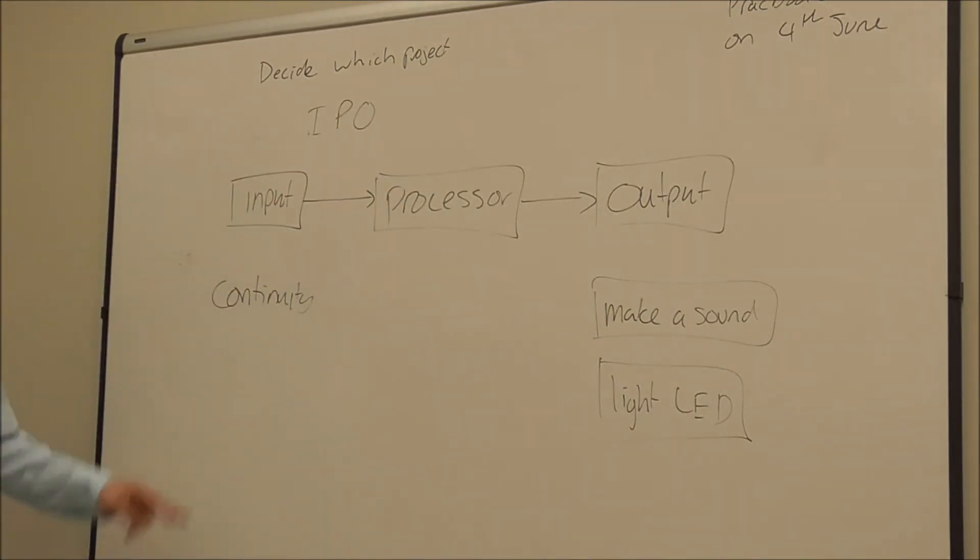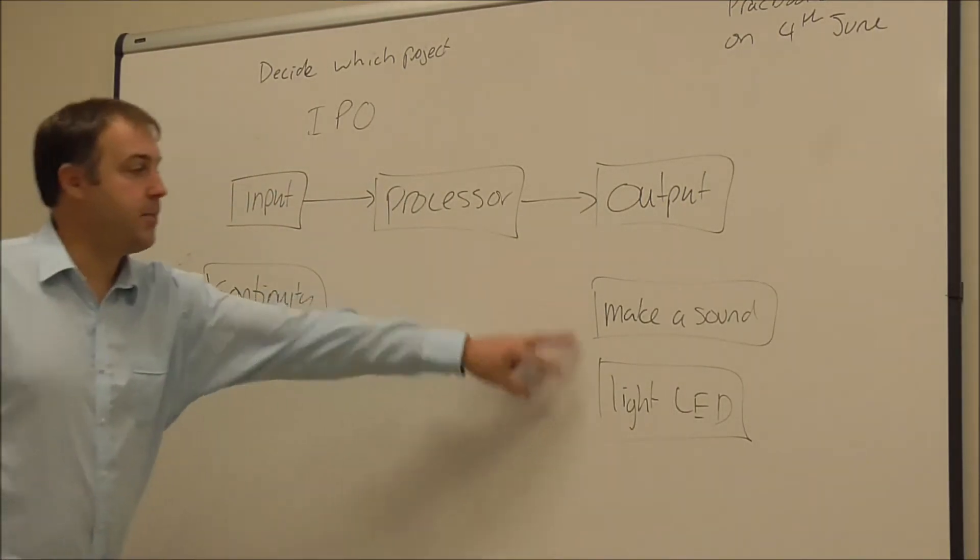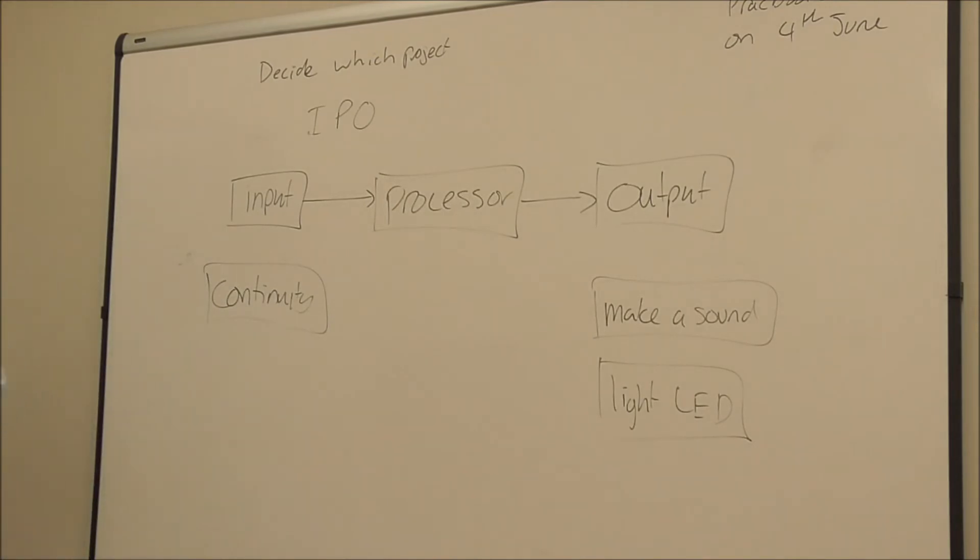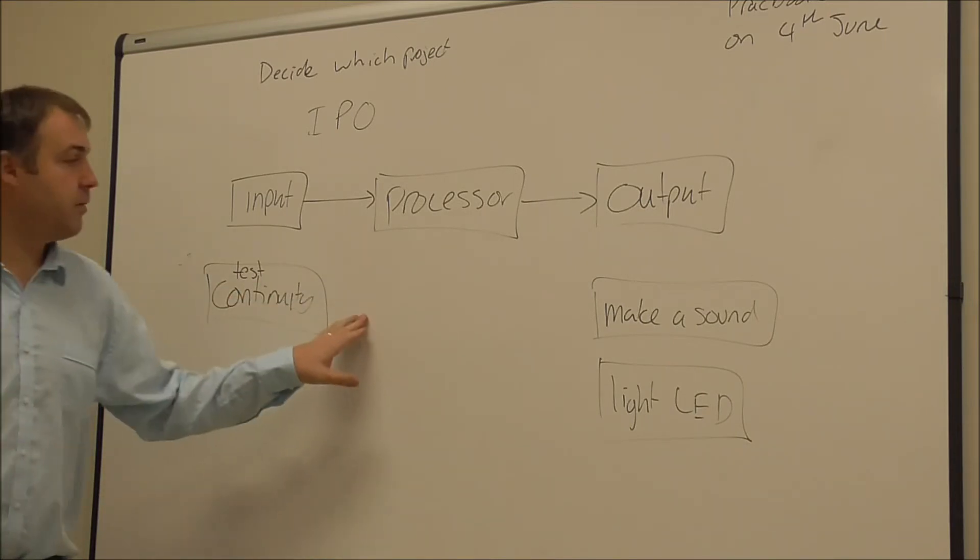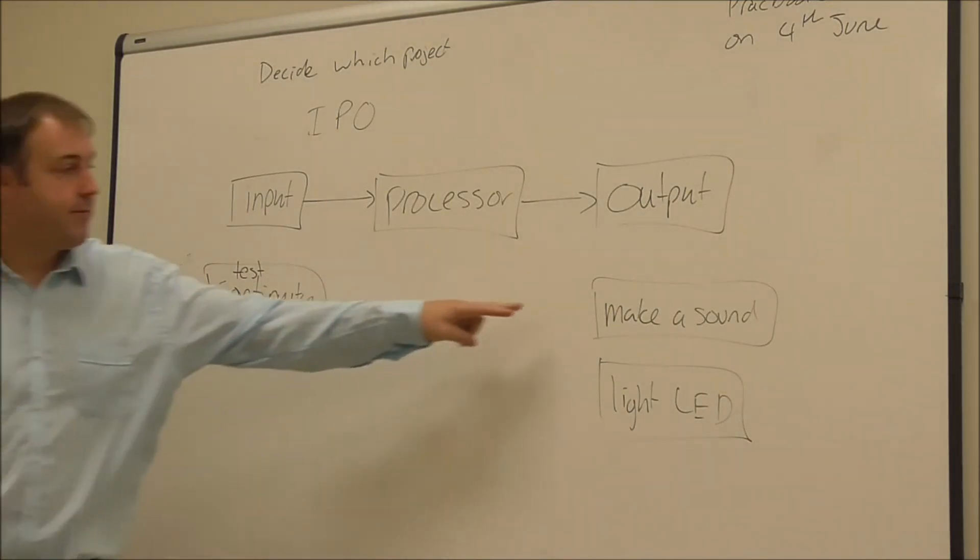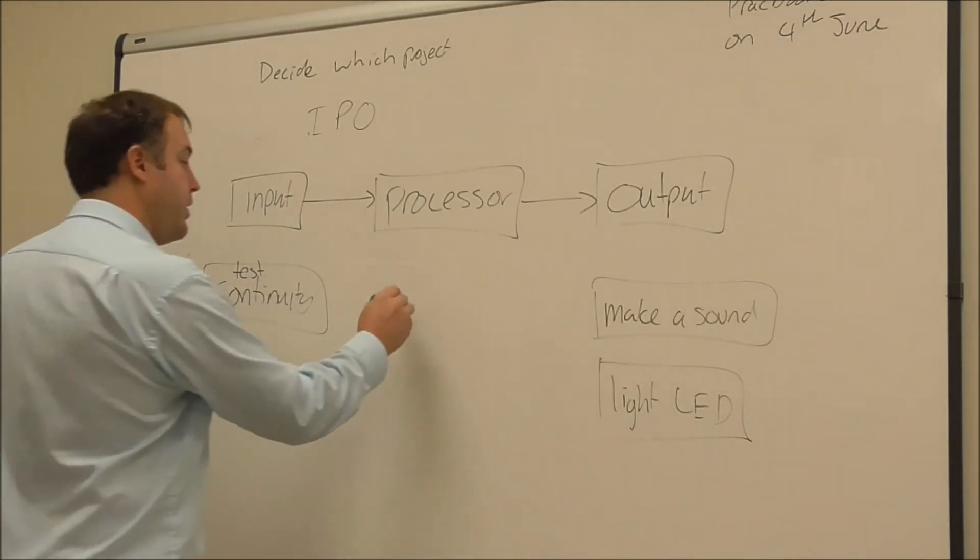So these two things, those are my outputs. So I want it to make a sound and I want it to light up an LED and I want it to just test the continuity. So I should actually have test written there. So test the continuity and that'll be a digital signal, either it's continuous circuit or it's not. In this circuit, what I need to make for it to make a sound, I need an astable.